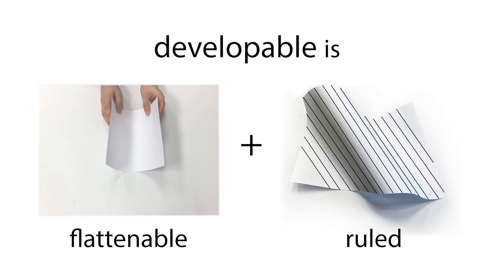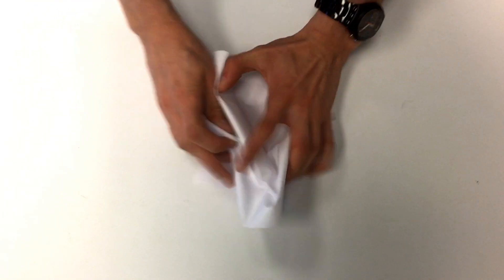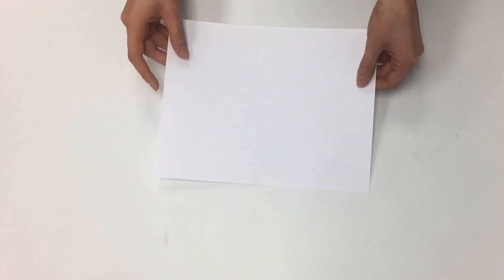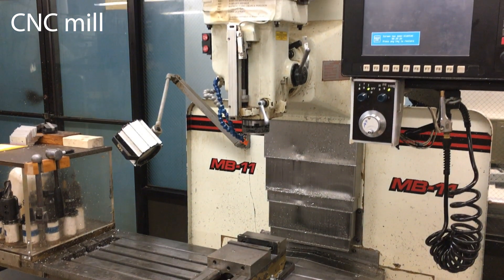A surface is developable if it is flattenable as well as ruled. Requiring only flattenability allows for crumpled surfaces. We are interested in smooth developable surfaces that can be constructed from flat material via bending or milled with a 5-axis CNC mill.